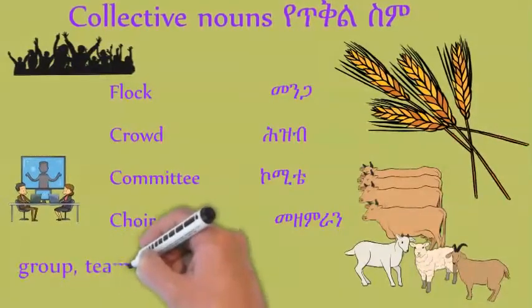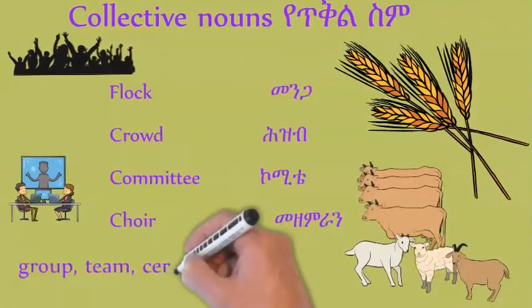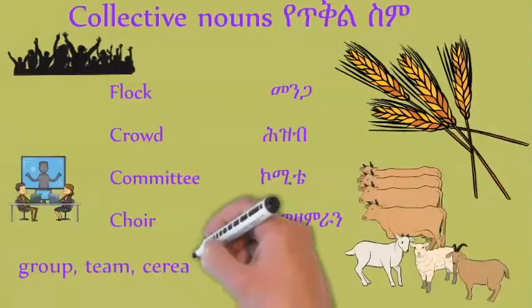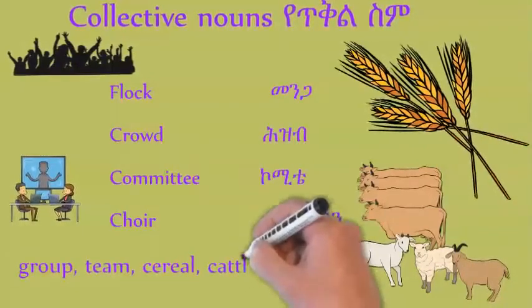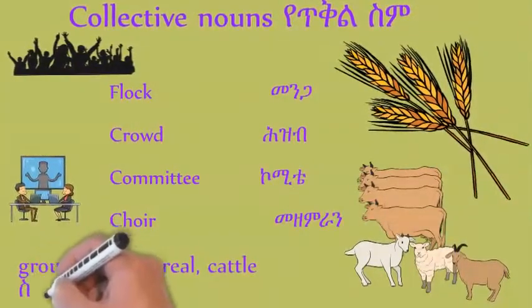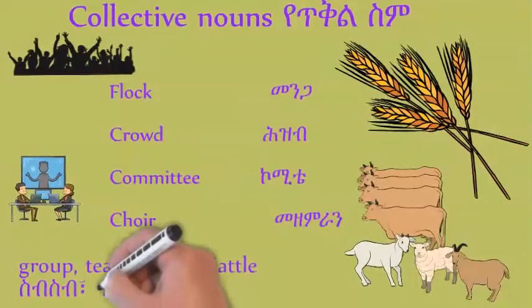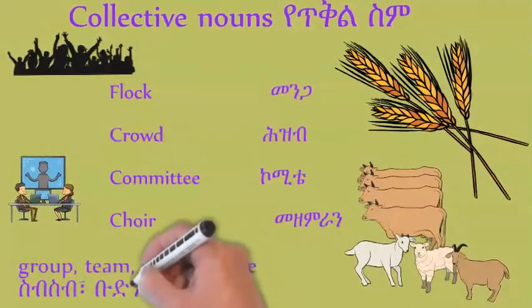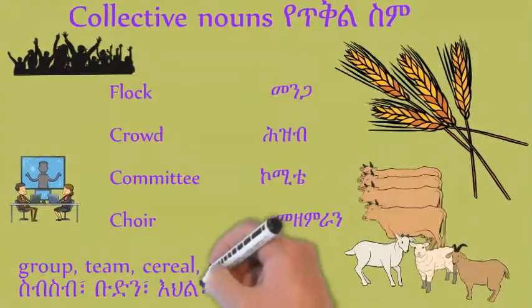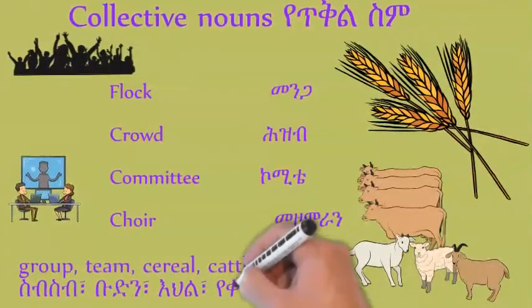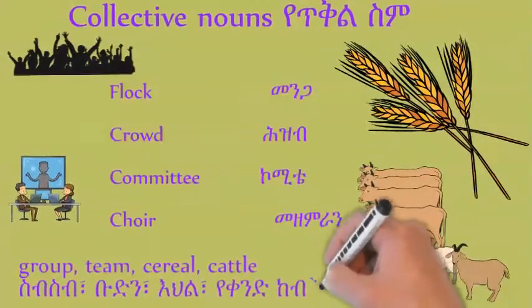When we say all this, we are talking about collective nouns. These are nouns. We have seen what the proper noun is, what common noun is, and what collective nouns are. So we have studied three types of nouns.